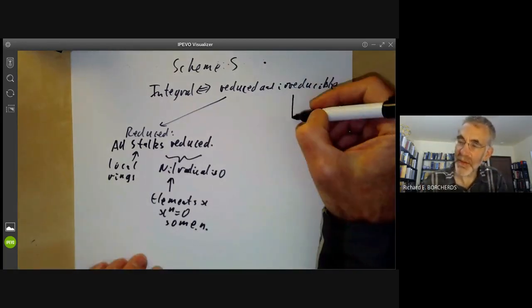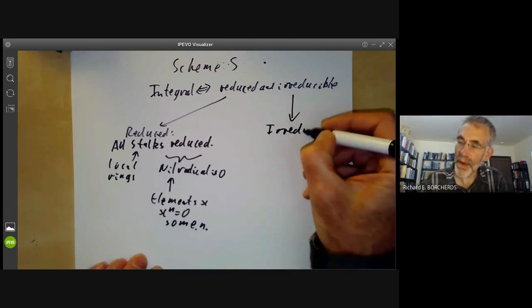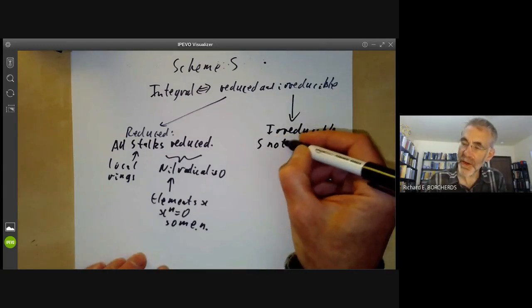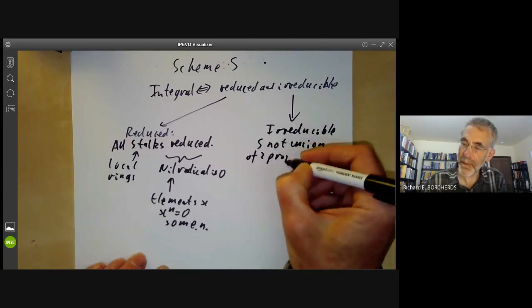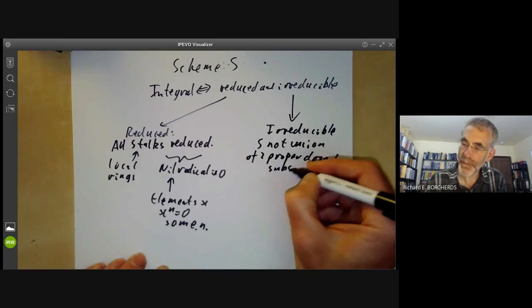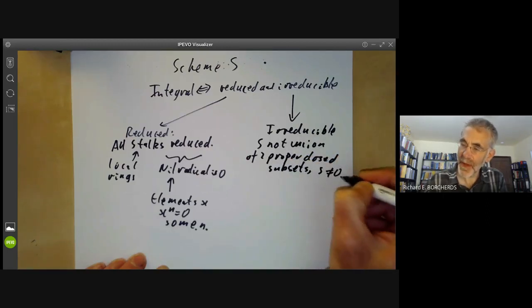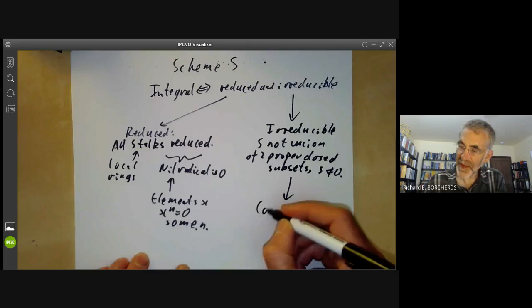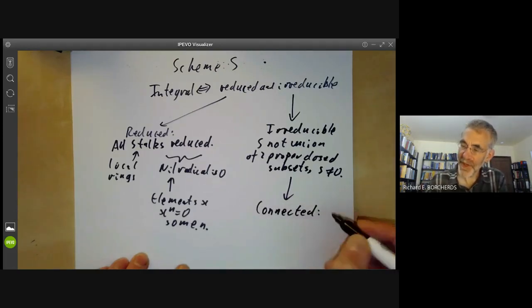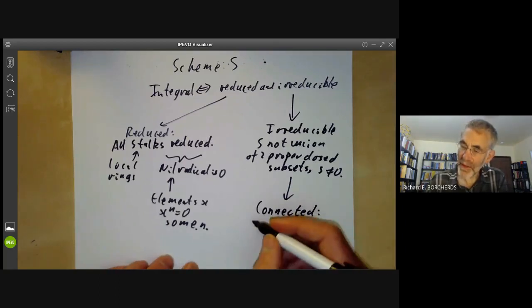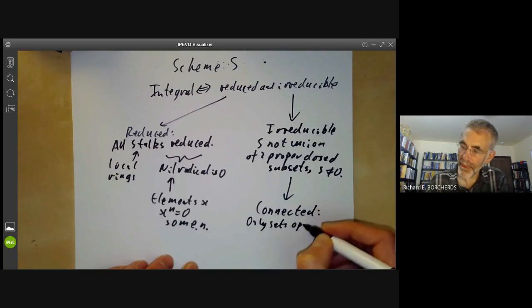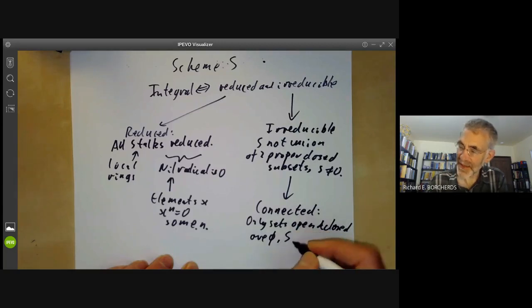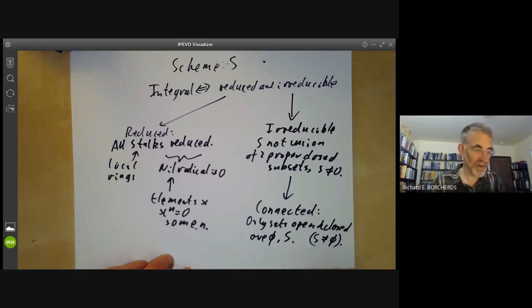What does it mean for a scheme to be irreducible? Irreducible just means the underlying topological space is irreducible: S is not the union of two proper closed subsets, and S is not empty. If a space is irreducible, it also has the property of being connected, which means that the only sets that are open and closed are the empty set and the whole space S, and S is itself not empty.